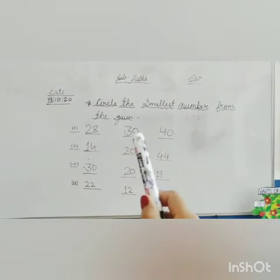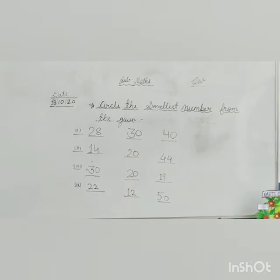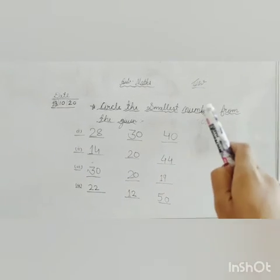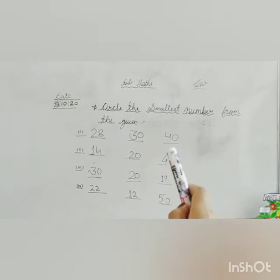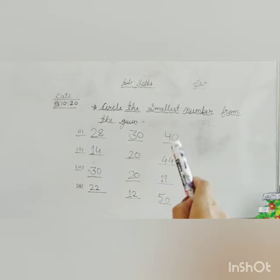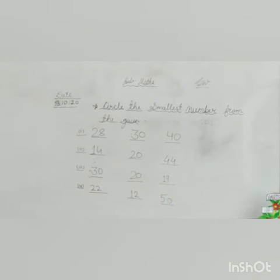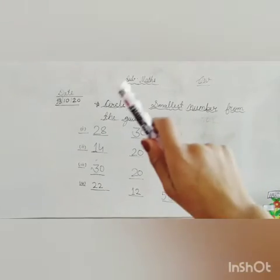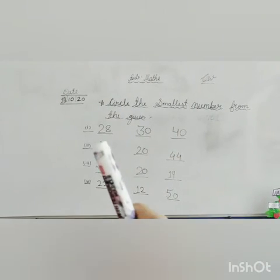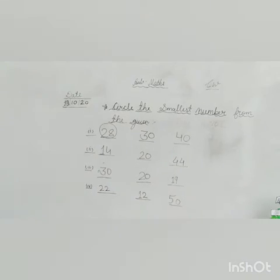which is smallest number, 28, 28 here. Okay? So, circle the number 28, 28 here.